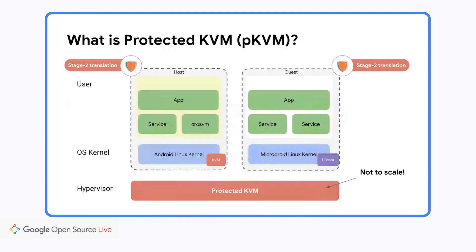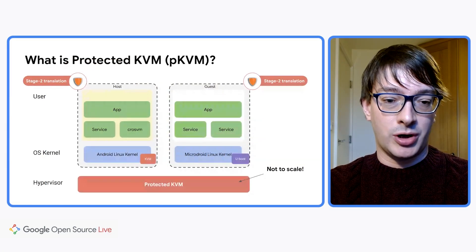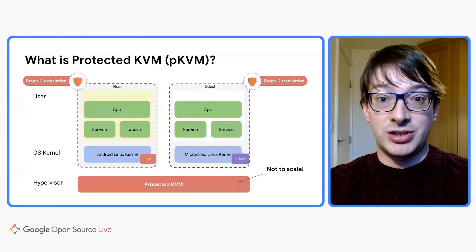The key part of AVF that enables this is Protected KVM, or pKVM — the extension to KVM we implemented to enable confidential computing. In the block diagram, on the left-hand side we have user space at the top down to OS kernel, and then at the bottom we have the hypervisor — the most privileged layer. These correspond to exception levels in the processor. The dotted box labeled host is your main Android system. When you turn on your phone and boot Android, you're booting the host.